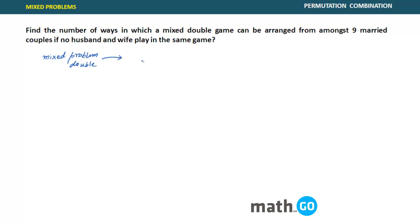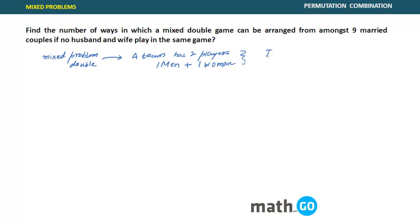Mixed double means that a team has two players. The configuration is: there will be one man plus one woman. Mind the spelling error here.